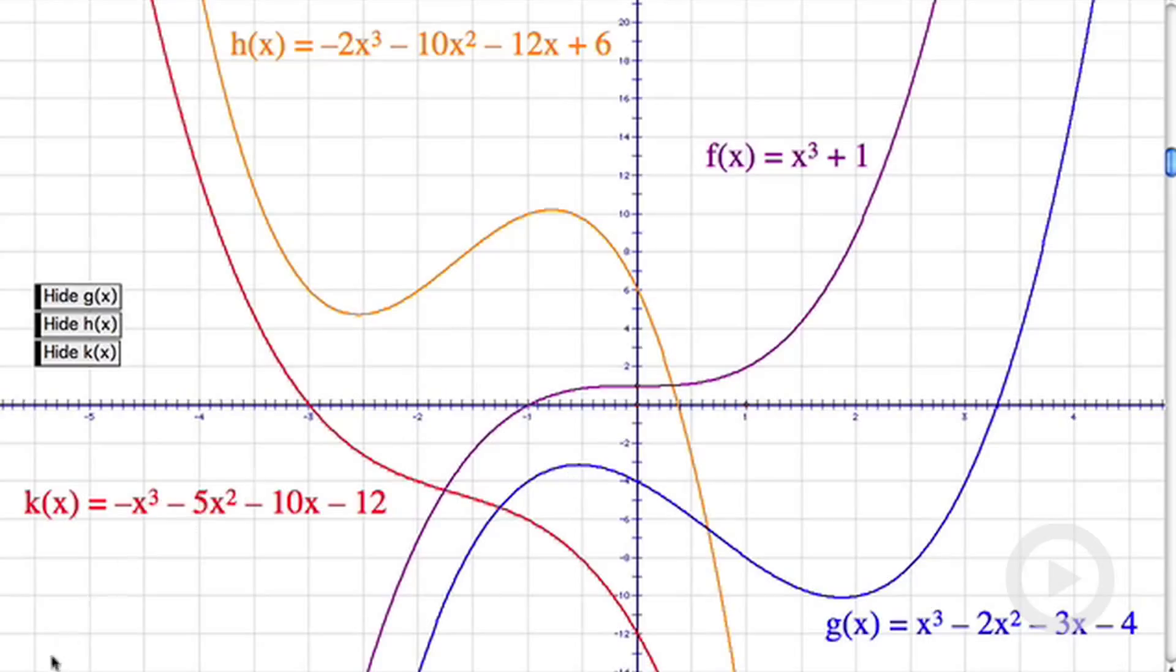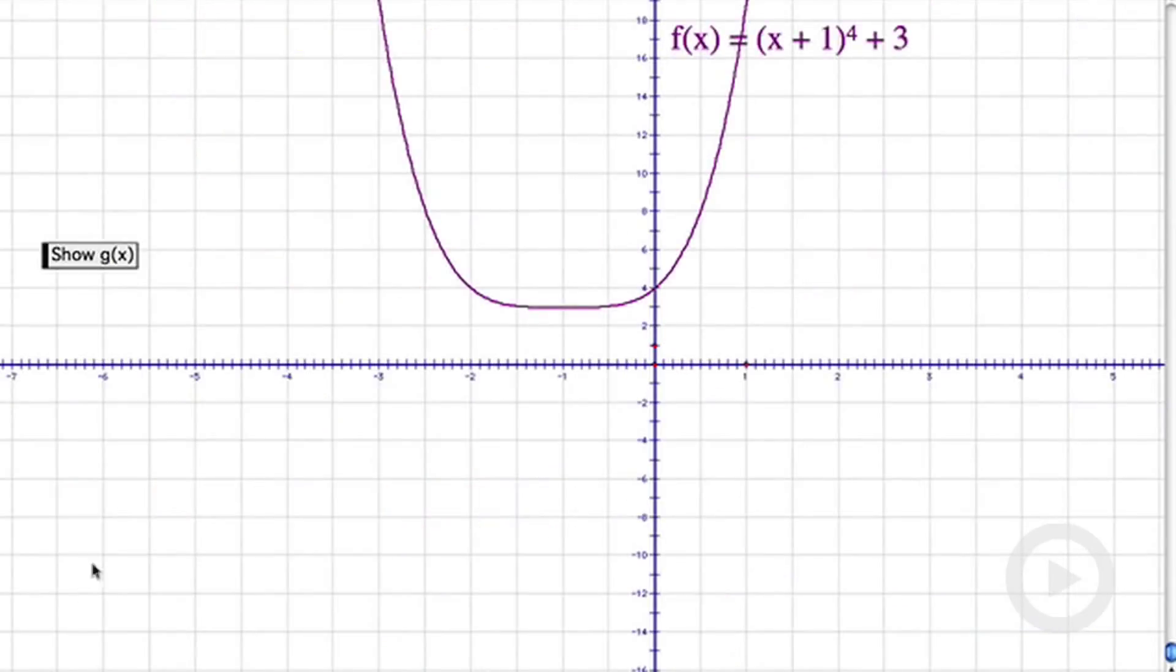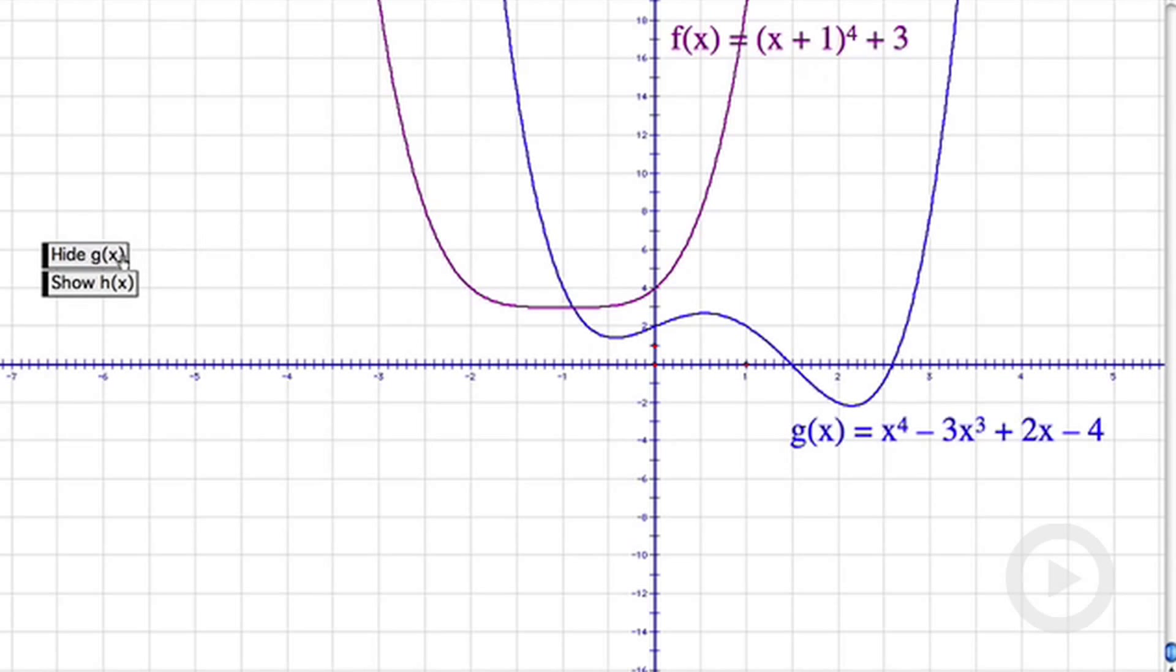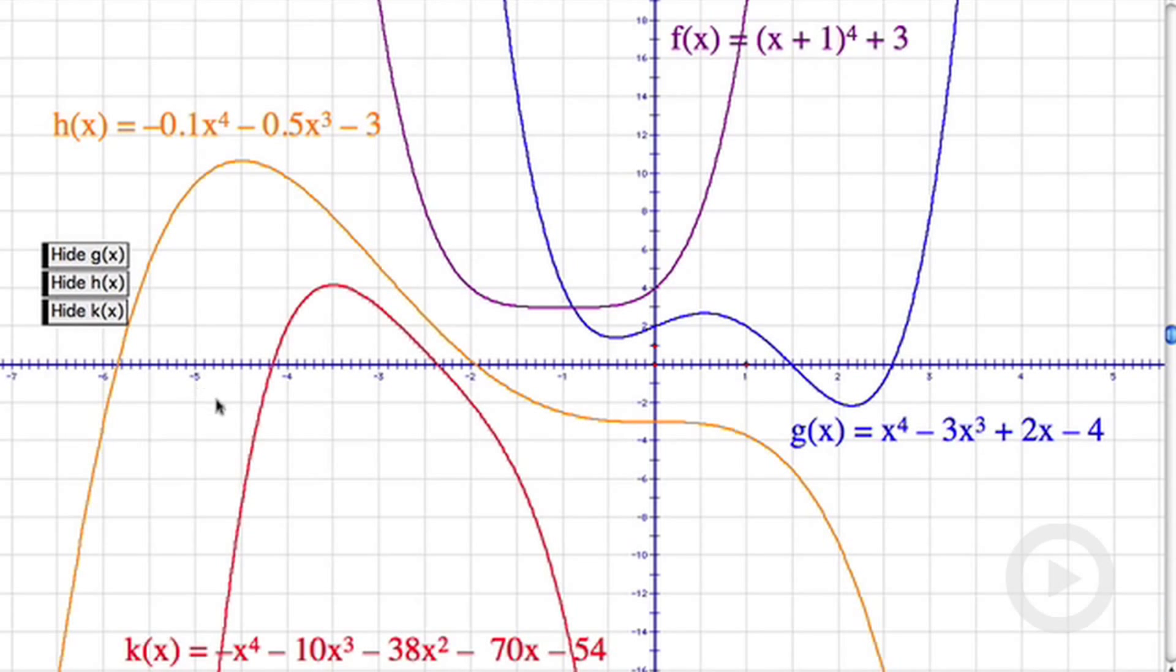Let's take a look at fourth degree polynomial functions, which are called quartic functions. Here we have f of x equals x plus 1, the quantity to the fourth, plus 3. Here's another, another, and another. So we have four quartic, four fourth degree polynomial functions.